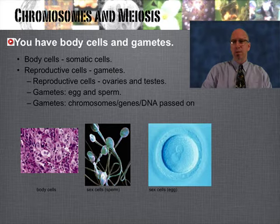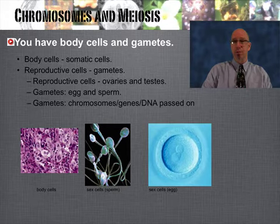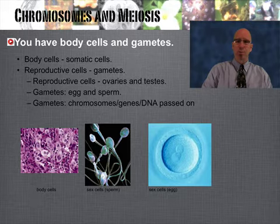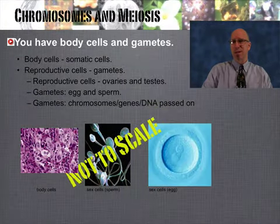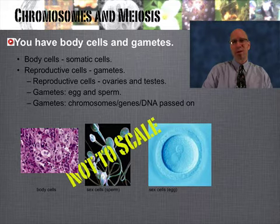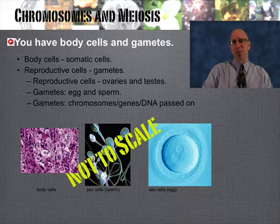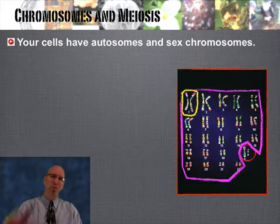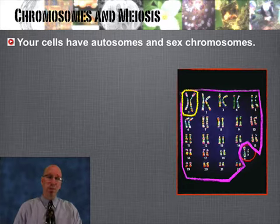We also have reproductive cells, known as gametes, and those are produced in specific structures — ovaries and testes — and they produce egg cells (ova) and sperm cells. The big deal about those is they contain the genetic material that is going to get passed on. Sperm cells are much, much smaller compared to the egg shown there — not to scale. So you have two different kinds of cells: gametes and body cells.